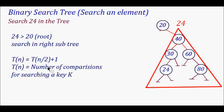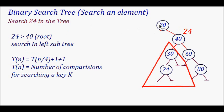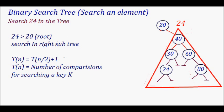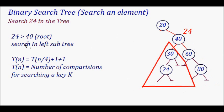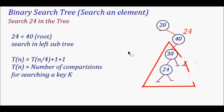Half of the elements are removed, so now I search in the right subtree. I compare 24 with 40 and find that 24 is less than 40. So I will search in the left subtree of 40. Again this gets divided and the problem becomes T(n/4). So 24 is less than 40 and I'm now searching in the left subtree.